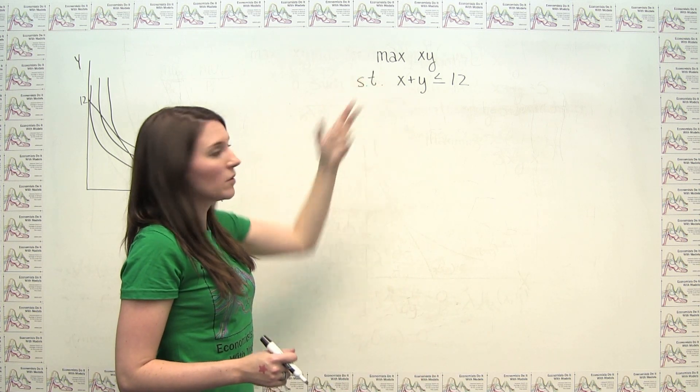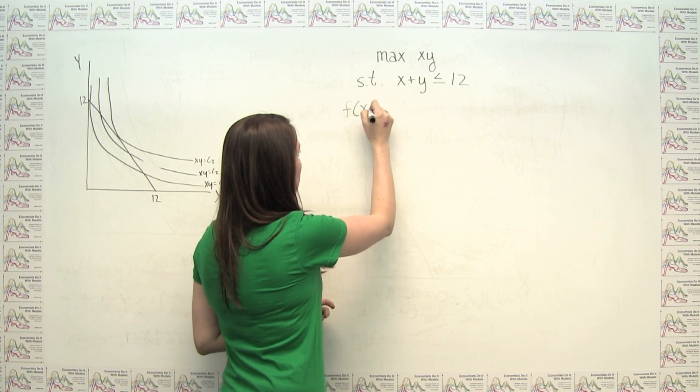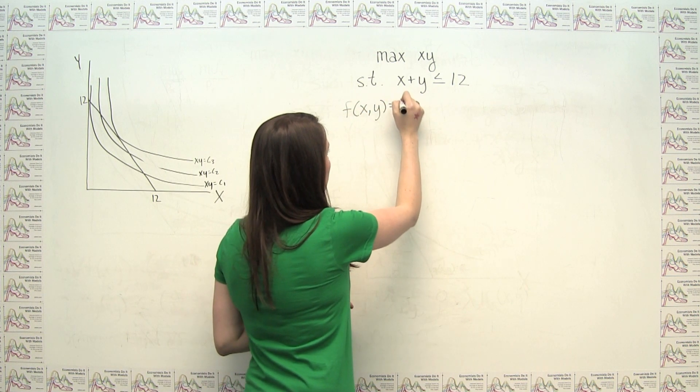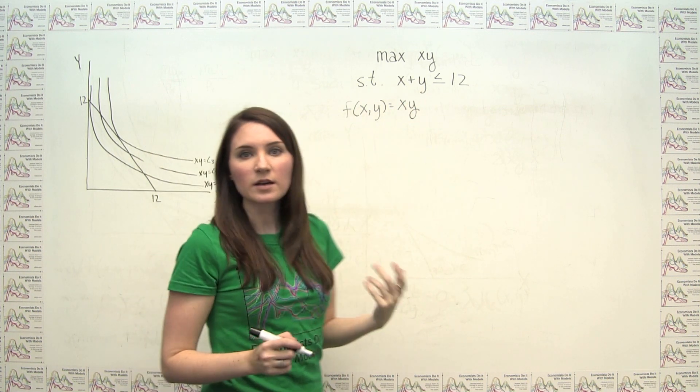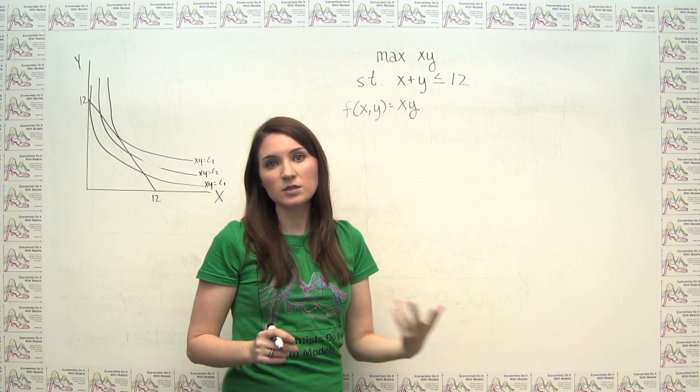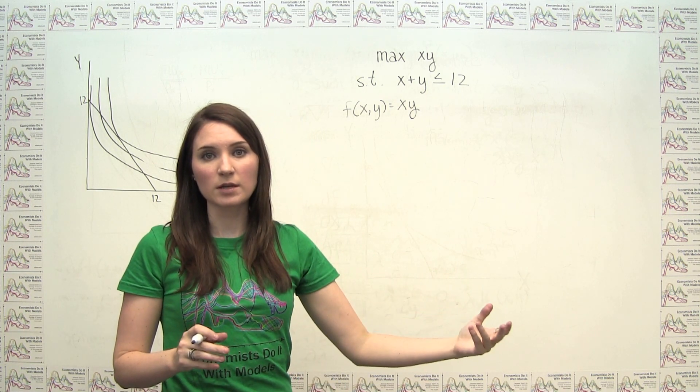In this case, what we were referring to as our f of x and y is simply x times y. Notice that when we were talking about our constraint g of xy, we said that it had to be of the form g of xy is equal to some constant.